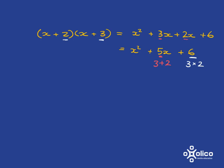So what we're seeing is that the last term is got by multiplying these two things together and the coefficient here by adding these two together.